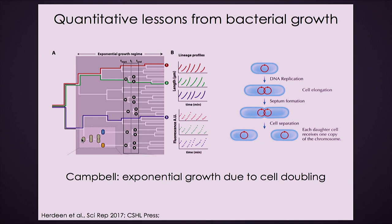What do we learn from bacterial growth? The way you do a bacterial growth experiment is to take a beaker with sugar, salt, and water, put in bacterial cells, and count how many cells there are as a function of time using microscopy, turbidity, or other methods. The number of cells grows exponentially — N(t) = N₀ · e^(λt). If you plot the log of the number of cells as a function of time you get a straight line. Very confusingly in the bacterial literature, exponential growth is called logarithmic growth — it's because you have to plot it on log paper to get a straight line. Also in the bacterial literature, cell multiplication is the same as cell division.